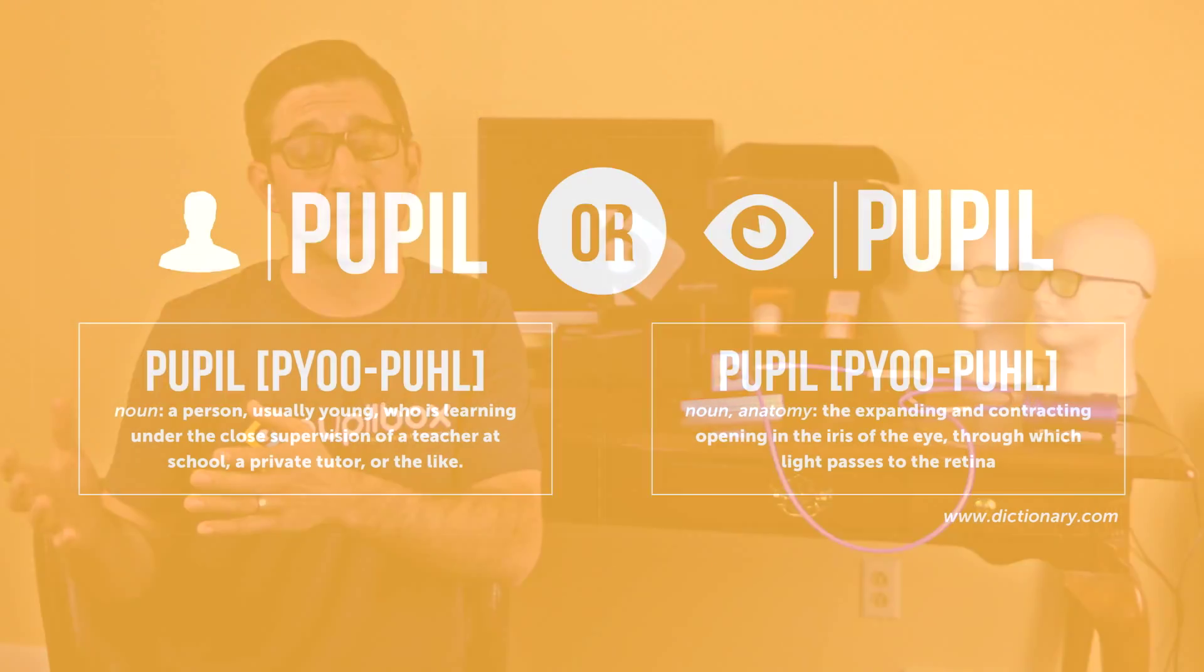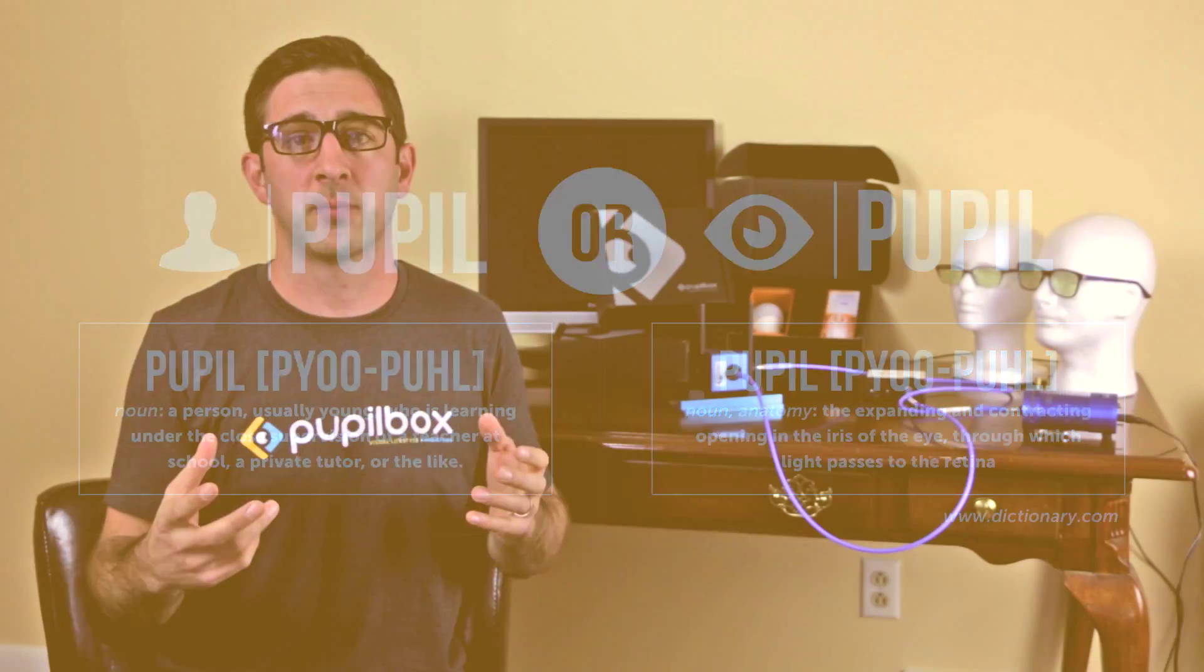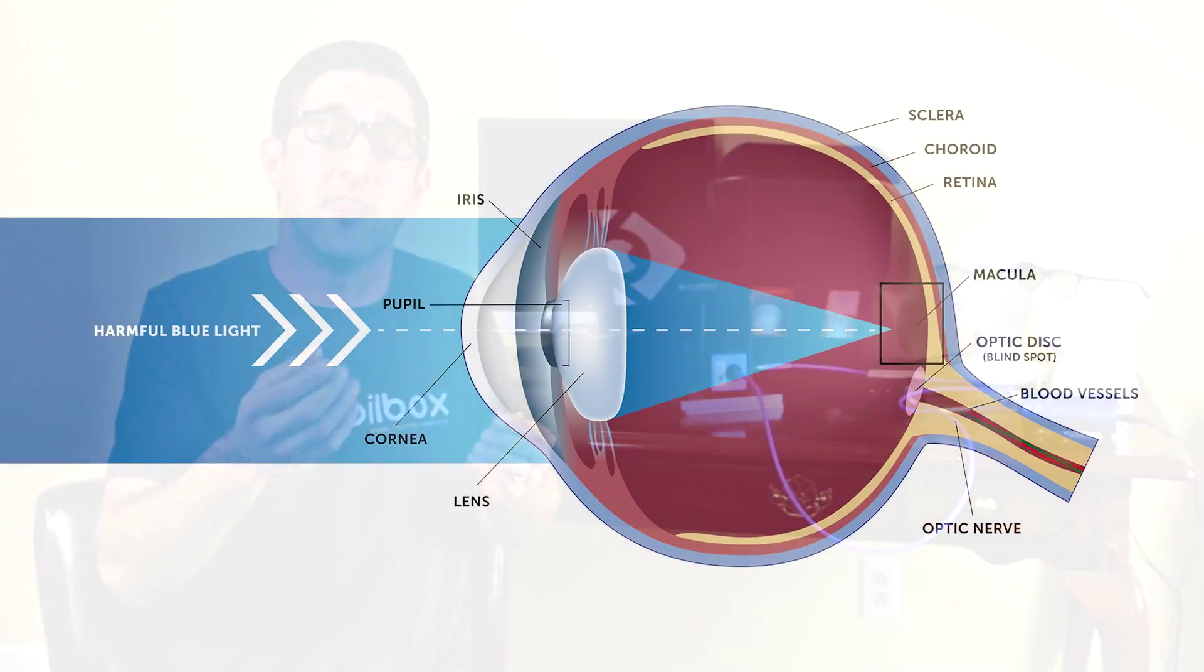The Pupil in Pupil Box really stands for both Pupil of the Student and Pupil of the Eye. Children are more susceptible to the dangers of blue light. One, because they have shorter arms, so they hold the devices closer to their face. That increases the intensity of the blue light.